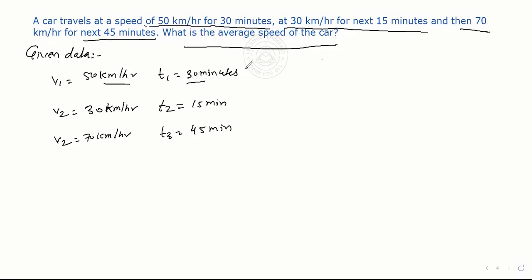We'll convert these to hours. Minutes are given, so we divide by 60 to convert to hours. This becomes 0.5 hours. Again, 15 divided by 60 gives us 1 by 4, that is 0.25 hours.